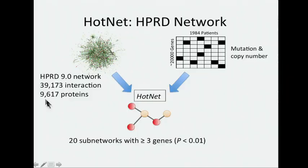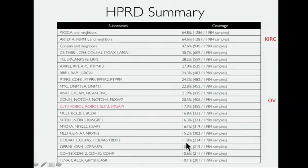We then did another run on an additional interaction network. This one is a little more focused, tends to be literature-curated interaction, so a smaller number of interactions — only about 40,000. We pull out a larger number of subnetworks, 20 with at least three genes, again with a good p-value. Many of them are the same or similar. Here's one with ARID1A and PBRM1, which is currently in the kidney cancer manuscript and was identified mostly in kidney cancer. Notch was in the OV manuscript identified by HotNet.